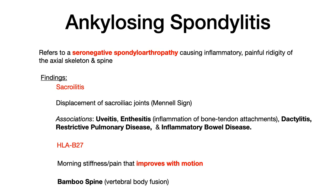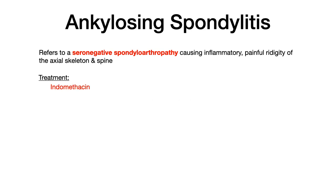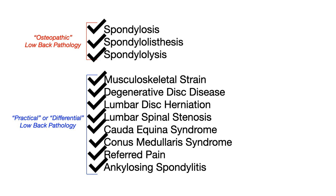Ankylosing spondylitis is associated with HLA-B27. The very high yield clinical finding is morning stiffness or morning pain that improves with motion throughout the day. Bamboo spine can be seen due to vertebral body fusion. All of these findings are very high yield so keep them in mind. Treatment for ankylosing spondylitis is indomethacin. This concludes the lesson covering the broad differential of low back pathology, all of which you absolutely need to know for COMLEX.